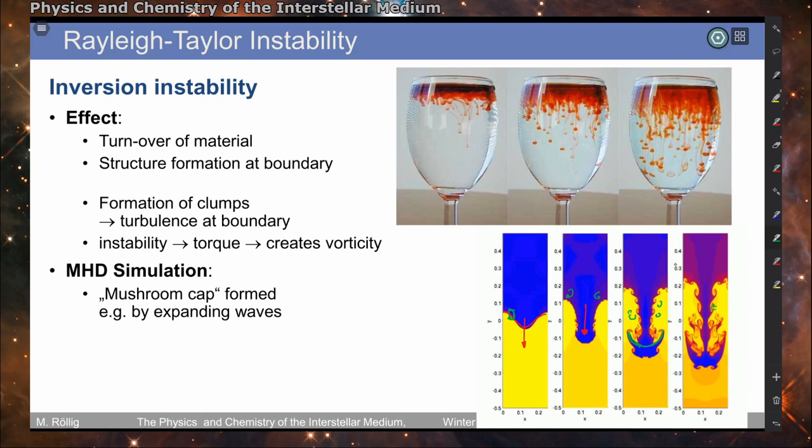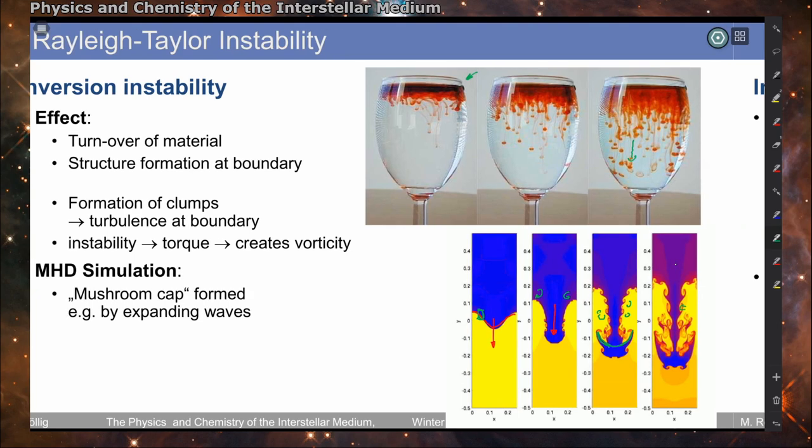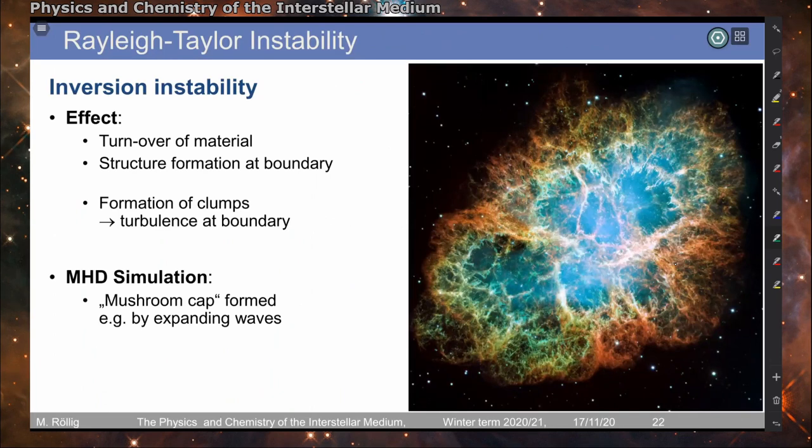So what we see here is the formation of turbulence at the boundary. On the top, you see this as an experiment where you have some corn syrup here on top of water, and then you form these droplets with the tail here, and this is also observed in the interstellar medium. We have these mushroom caps by these expanding waves. And we see this in the interstellar medium, where we have on the outside basically a dense material, and we have the thin material in the inside, but the gravitational pull is going in this direction, and we form these clumps and the condensations at the boundary between the dense and the thin material.